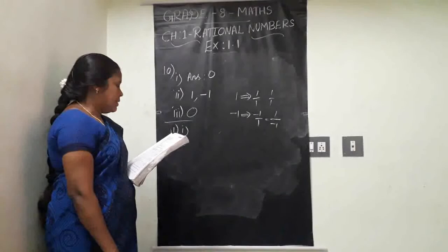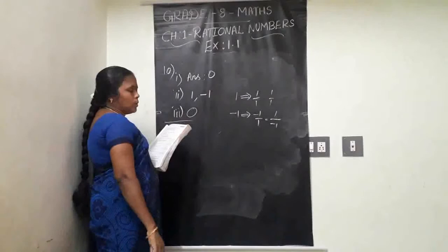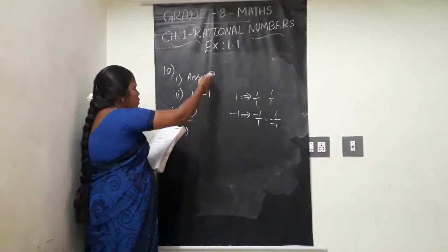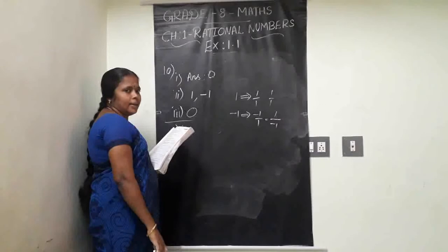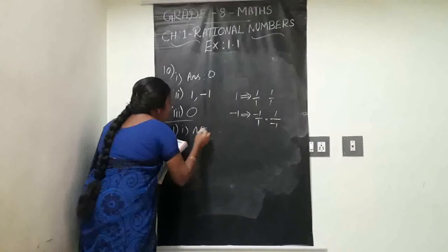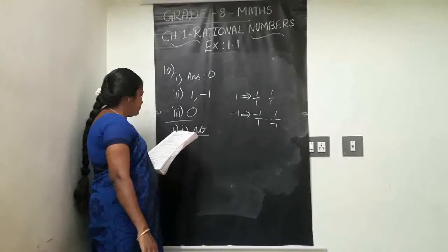Question eleven — fill in the blanks. First: zero has blank reciprocal. Based on what we just discussed, zero has no reciprocal. So the answer is: zero has NO reciprocal.